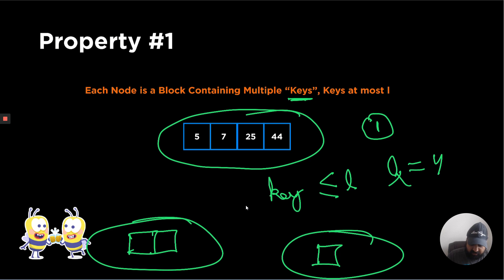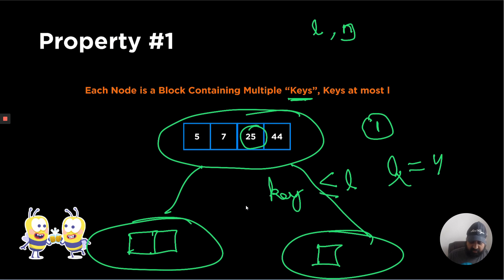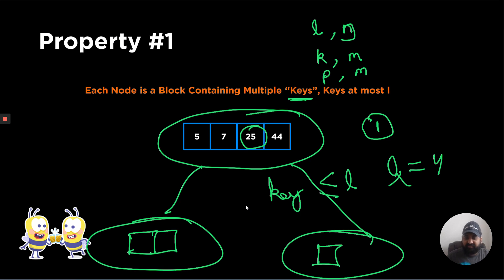A disclaimer: throughout this entire set of videos we will use the terminology where L is the number of keys in a node and N is the number of nodes in the tree. Some books use other terminology like K and M, or P and M, where M refers to the M-ary tree order — it is exactly the same; the concepts are the same, just different variable names.